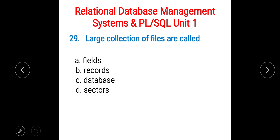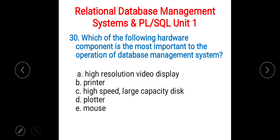Next: a large collection of files is called — A) record fields, B) records, C) database, D) sectors. The right answer is C) database — a large collection of files is called a database.